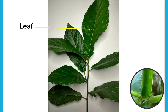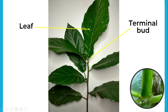Another part of the shoot system is what we call the terminal bud, which grows at the apex or top or tip part of a plant. This is what we call the terminal bud, and it is responsible for making the plant grow taller and bigger.